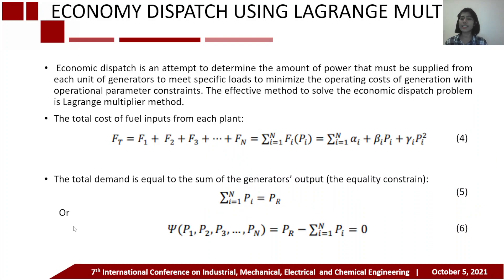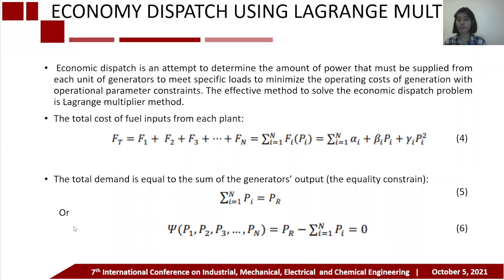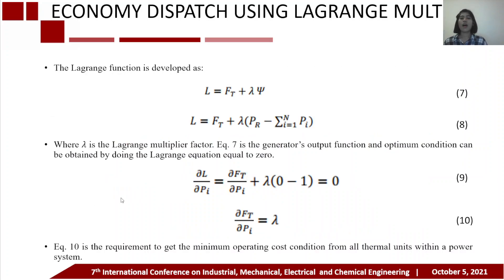Economic dispatch is an attempt to determine the amount of power that must be supplied from each generator unit to meet specific loads, minimizing the operating cost of generation with operational parameter constraints. The effective method to solve the economic dispatch problem is the Lagrange multiplier method. The total cost of fuel input from each plant can be expressed in equation 4, and the equality constraint in equations 5 and 6. The Lagrange function is developed in equation 7, and by rearranging equation 6 into equation 7, we get equation 8, where lambda is the Lagrange multiplier factor.